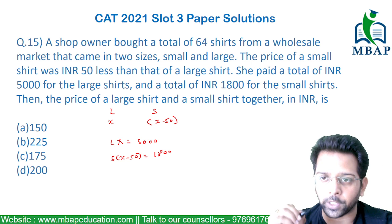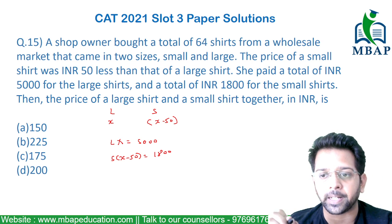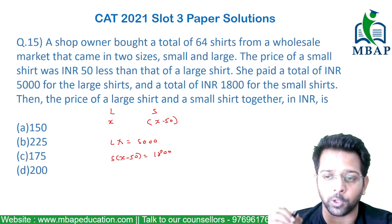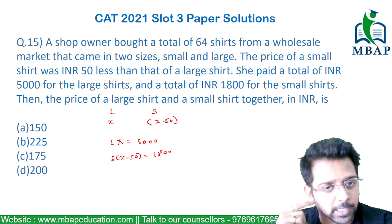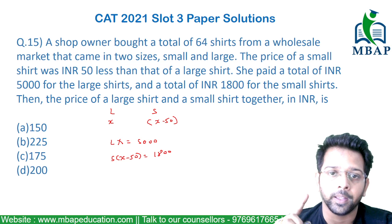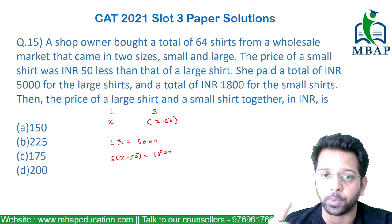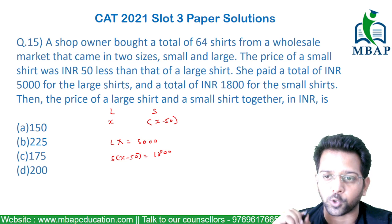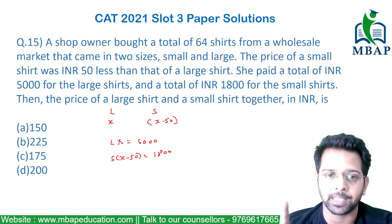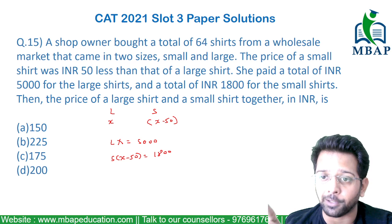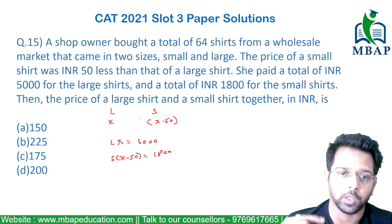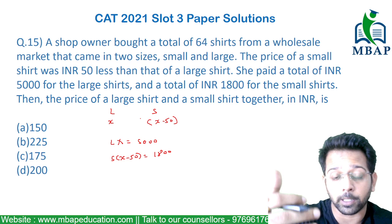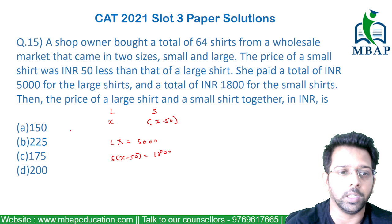We also have to consider that the number of shirts, whether small or large, will always be an integer number. So if the number of shirts is an integer, then the price will also be an integer. So L, X, S, and X minus 50 — all the values are basically integers. You cannot solve both equations directly as it's going to take a lot of time, so we'll use the options to solve them.